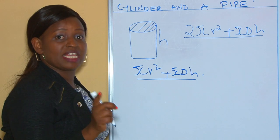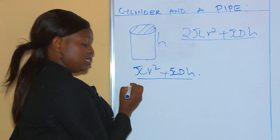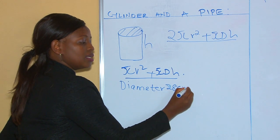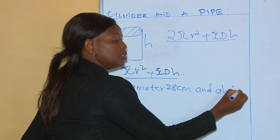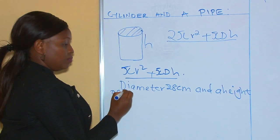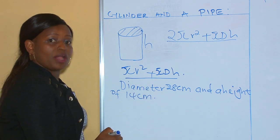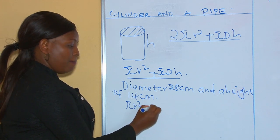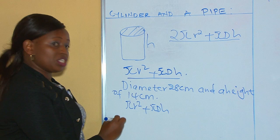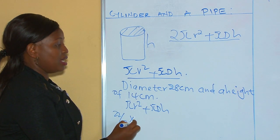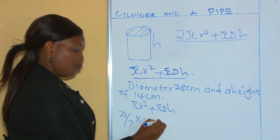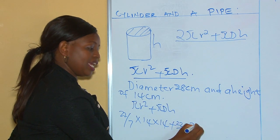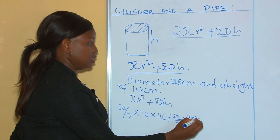For example, find the surface area of an open cylinder whose diameter is 28 centimeters and height is 14 centimeters. We apply the formula: πr² + πdh. For πr², that's 22/7 times r, and our r is 14 (half of diameter 28). For the curved surface, πdh is 22/7 times 28 times 14.